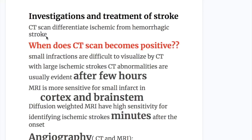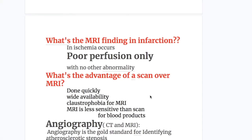Diffusion-weighted MRI has high sensitivity for identifying ischemic stroke within minutes after onset. In ischemia, there is poor perfusion only, with no other abnormalities seen on MRI. CT scan is done quickly and has wide availability, while MRI has the limitation of claustrophobia and is less sensitive than CT for blood products.